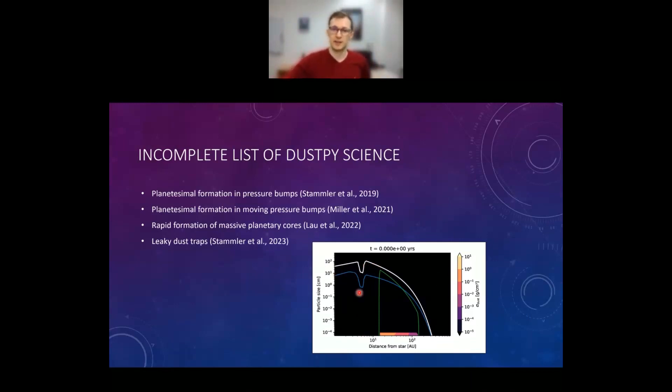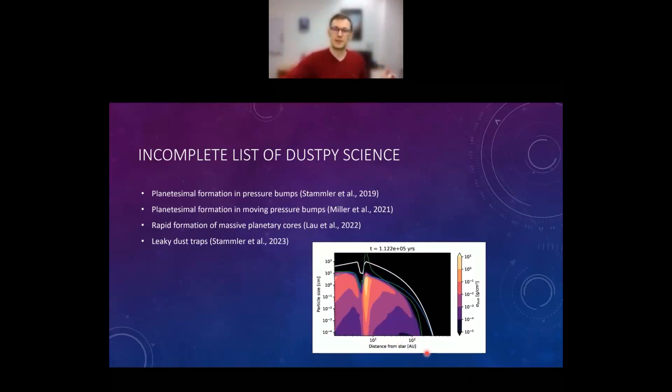And in the most recent one, we investigated how leaky actually these pressure bumps are. So in this model, we have a Saturn mass planet at 5 AU and we only initialize dust in the outer disk. And if we run this now, the particles are not really trapped efficiently. So what's happening here is that the large particles are trapped, but in the pressure bump, they are fragmentation limited. We fragment down to smaller particles and the small particles can diffuse inwards. So we could contaminate, chemically contaminate the inner disk without the disk material, despite there being a planet.